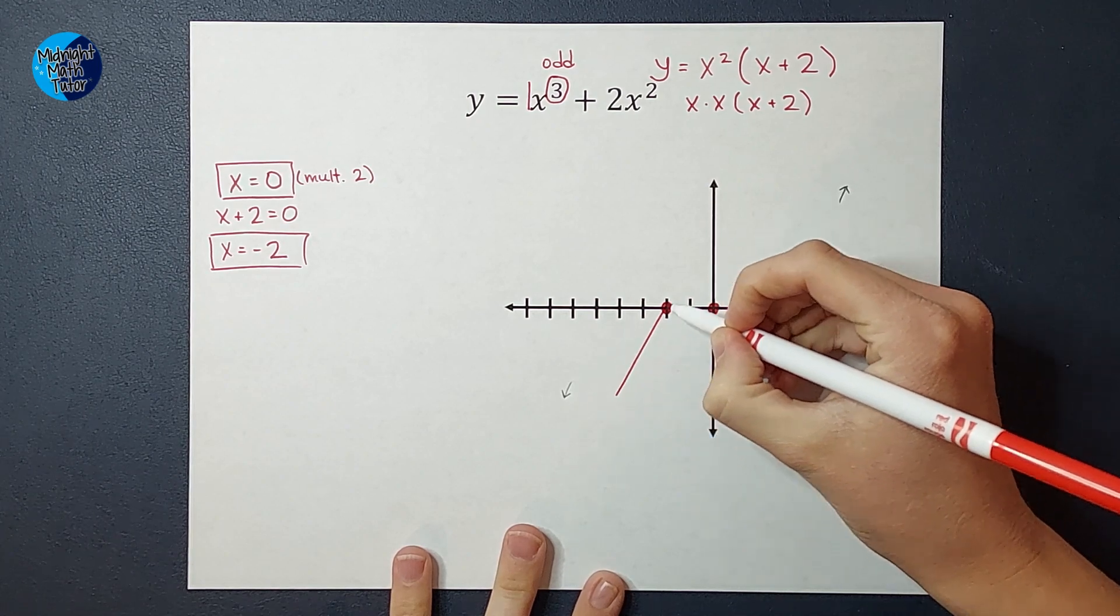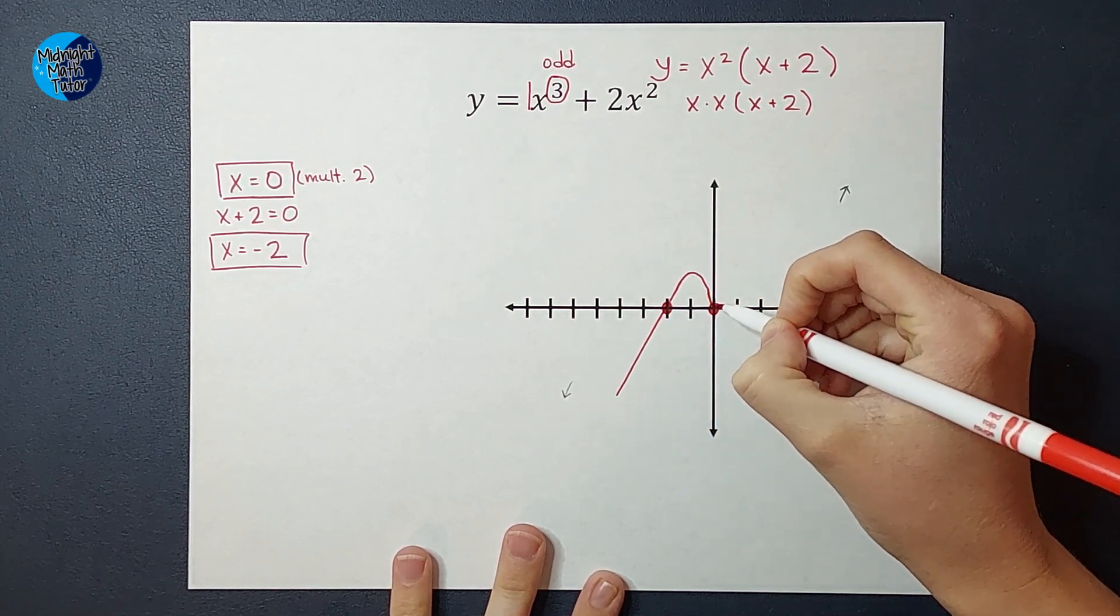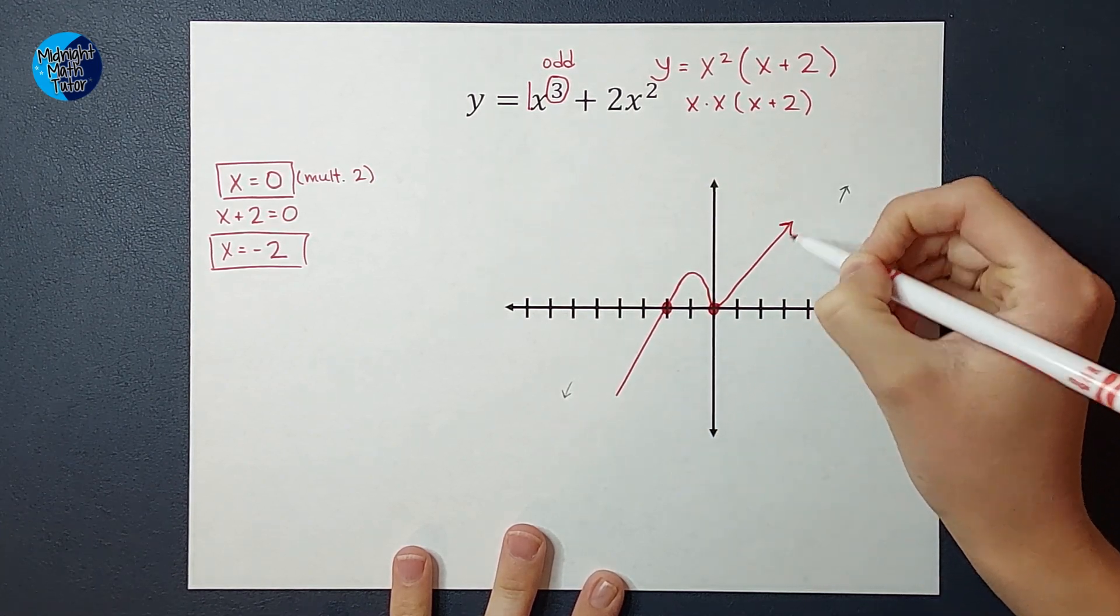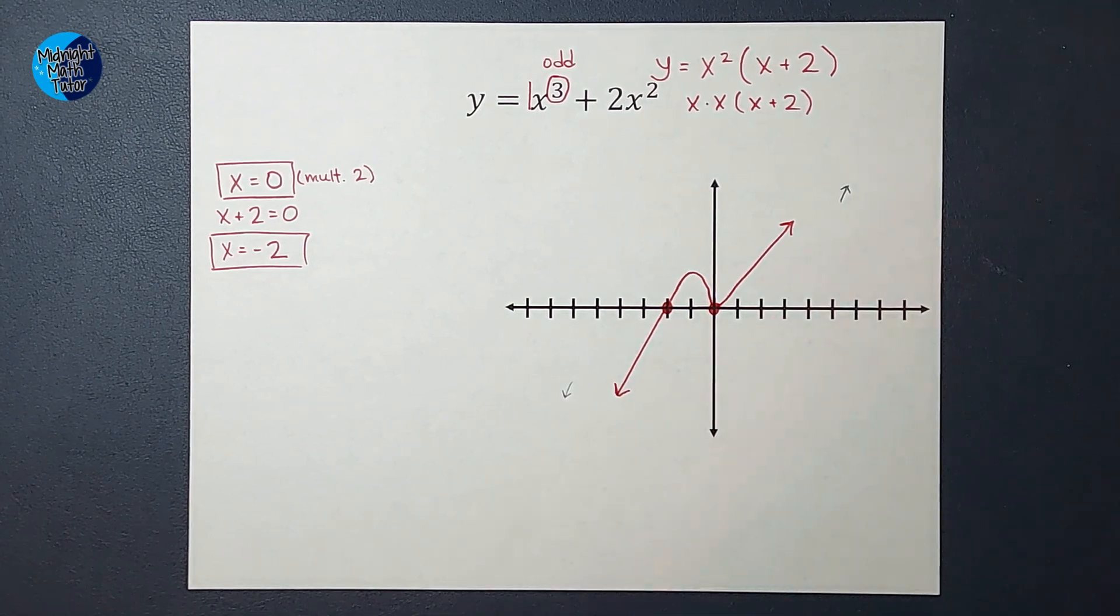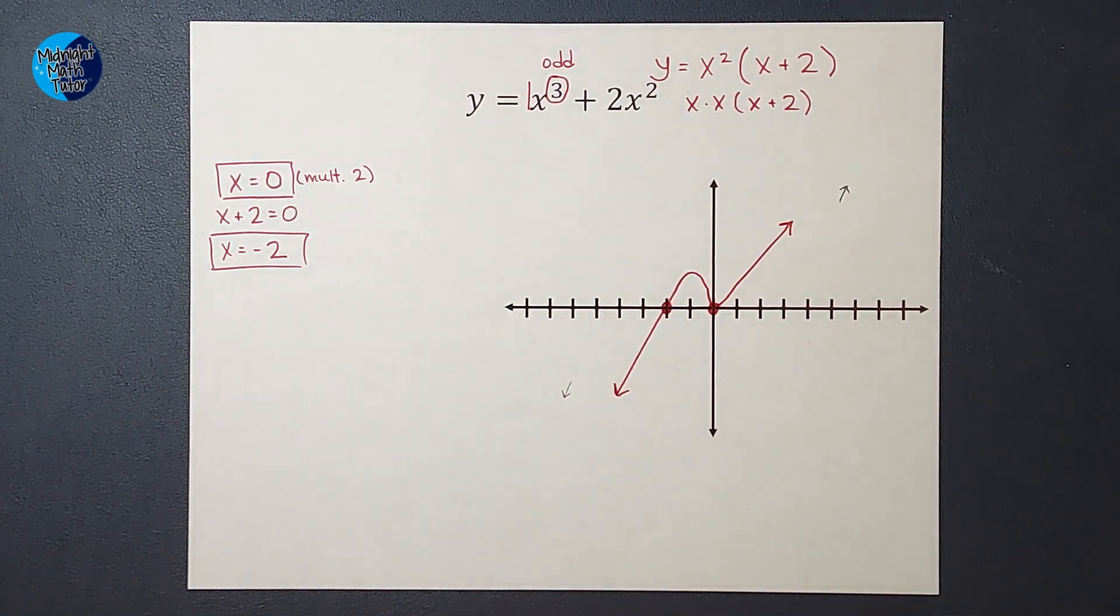So it's going to look something like this: it's going to go through that point, bounce, and up.